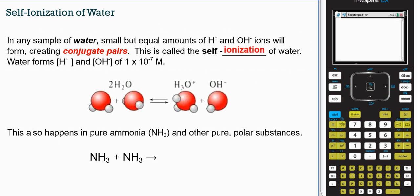So this can happen in any pure covalent substance that's polar. For example, we have ammonia, and when ammonia self-ionizes, it will form ammonium ion and the amino ion. So what we see is a similar phenomena there.